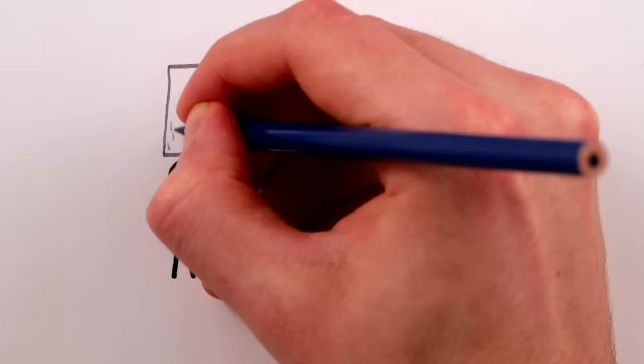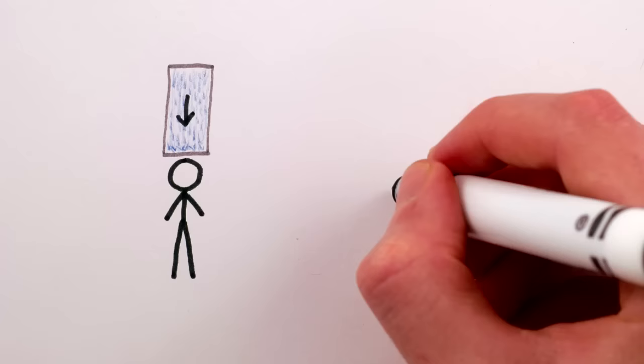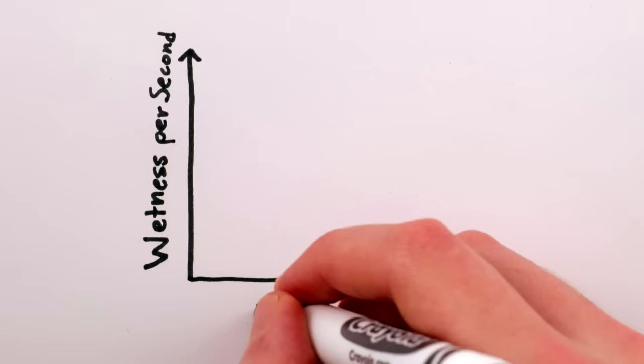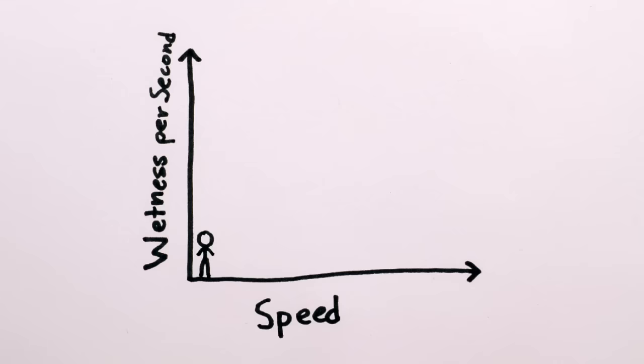Now, if you're not moving, the rain from the top is all you'll get. But if you are moving, you'll also run into raindrops from the side and you'll get wetter. So in any given second, you stay driest by standing still, and the faster you move, the wetter you become.